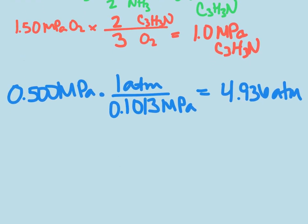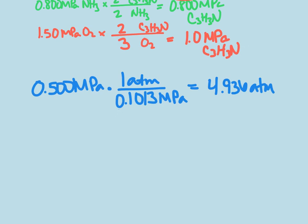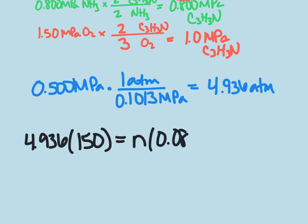Now we can put that into our PV equals nRT. So we know that our pressure is 4.936, our volume is 150 liters. We're trying to figure out how much we can produce, so we're going to find our moles. We have our gas constant, 0.08206, and we have our temperature of 298 Kelvin.